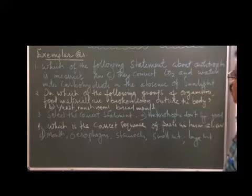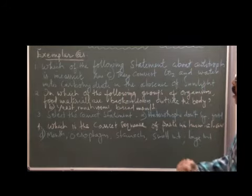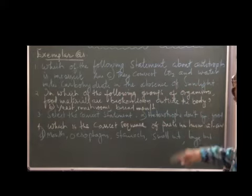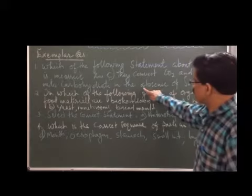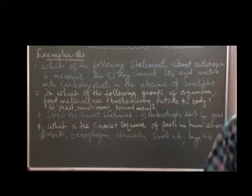Which of the following statement about autotrophs is incorrect? The answer is C: they convert carbon dioxide and water into carbohydrate in the absence of sunlight. The word absence of sunlight is wrong. Because of this absence is incorrect, this is the answer.